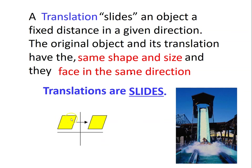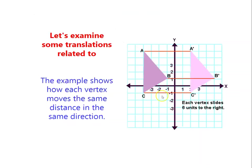So the same here — it just only translates. From here, let's say from quadrant two going to quadrant one, or up and down. Whatever the translation, it will just change the place. That is called translations — they are just slides. Let's examine some translation related to this example. The example shows how each vertex moves the same distance in the same direction. So this is the object going to the new place, and therefore we put A prime, B prime, and C prime.